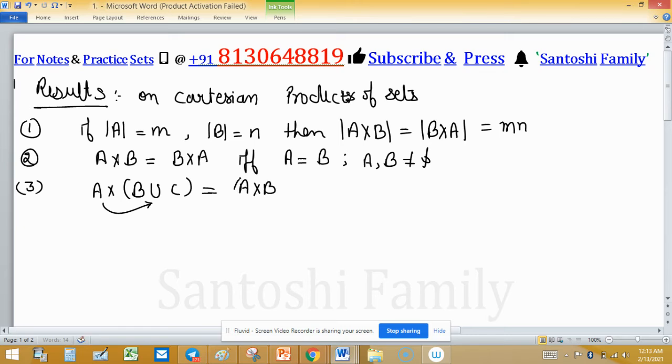Result 4: if A is a subset of B, this implies A cross C will be a proper subset of B cross C.